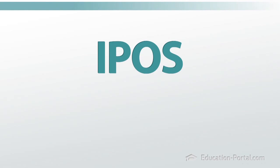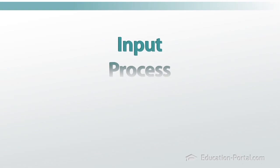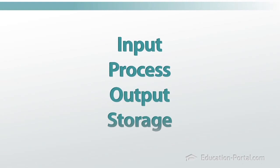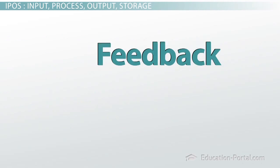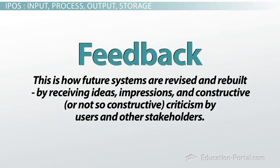Besides the four functions of IPOS — quick, what does IPOS stand for? That's right: Input, Process, Output, and Store. An information system also requires feedback. This is how future systems are improved going forward.